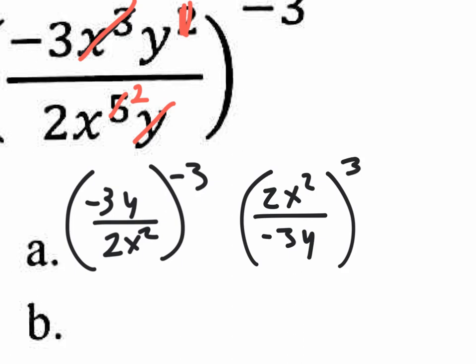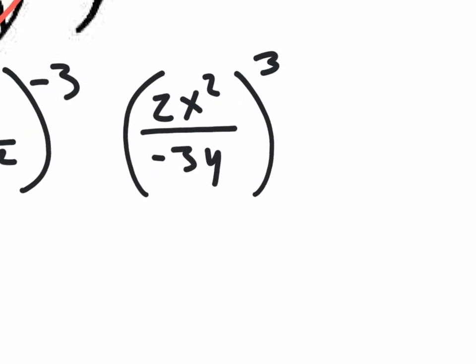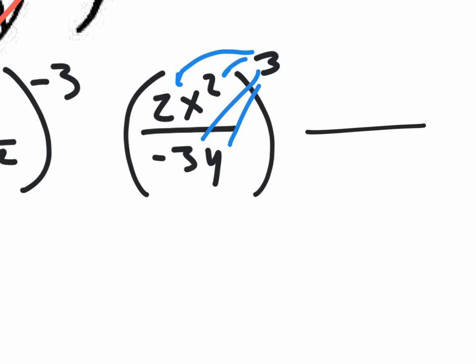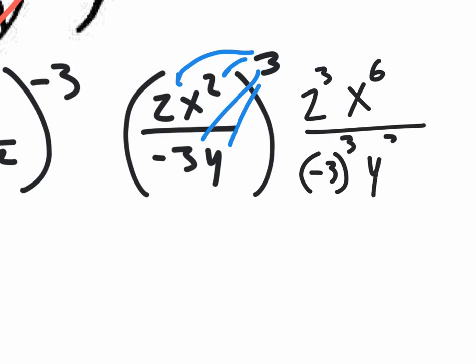You're going to have 2X squared on top, negative three Y on the bottom, and a positive three on the outside. Now we distribute that outside exponent of three to each and every inside exponent. So we get two to the third, X to the sixth. On the bottom, negative three Y — it might be a good idea to put that in parentheses. Negative three times negative three times negative three is still going to be negative. We also have the Y to the third power.